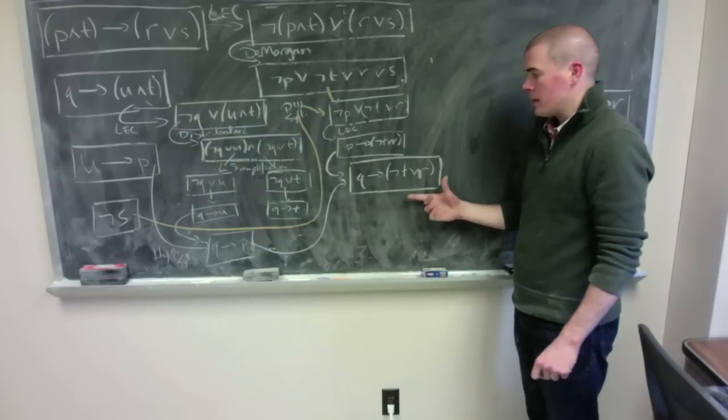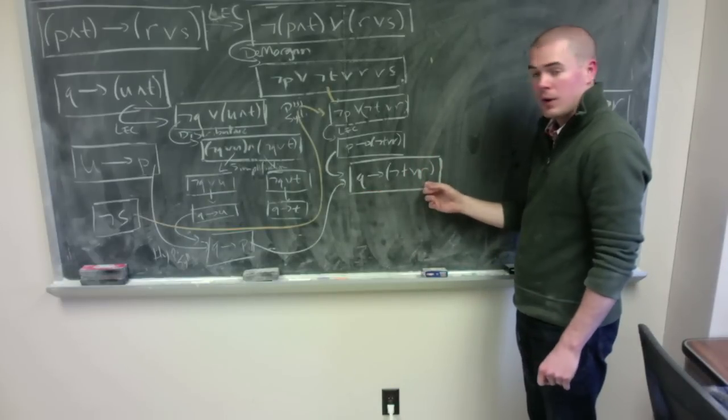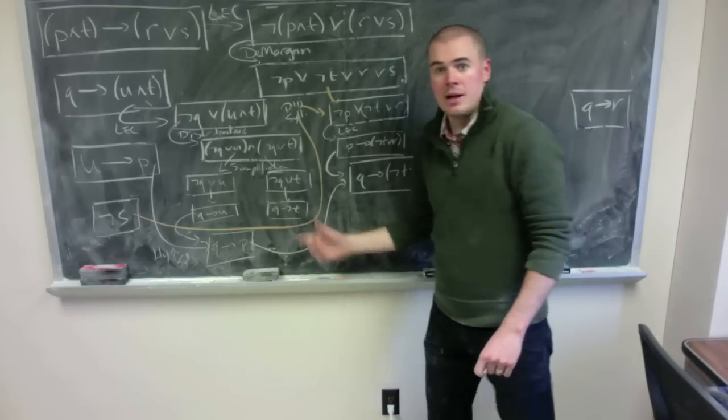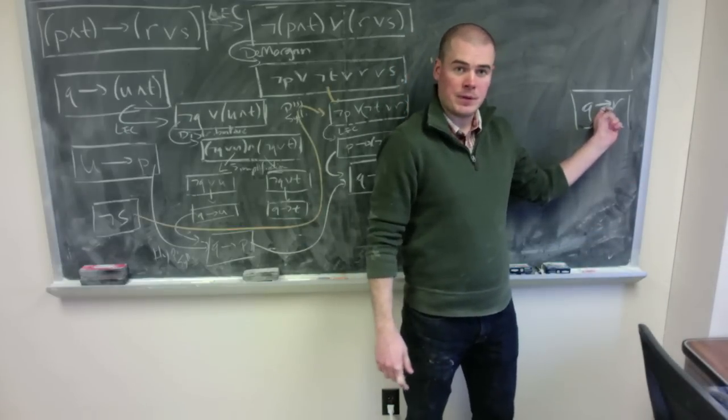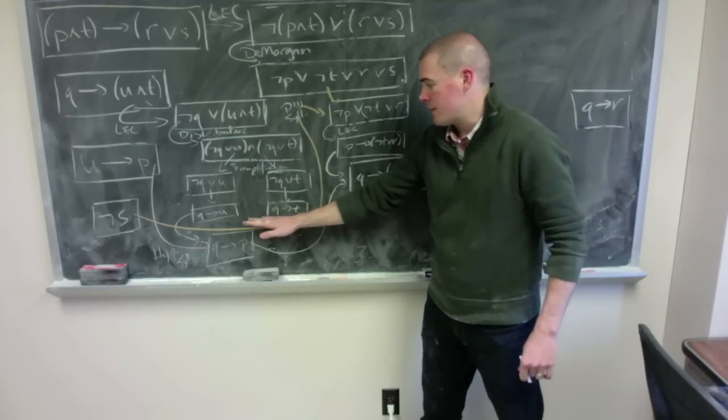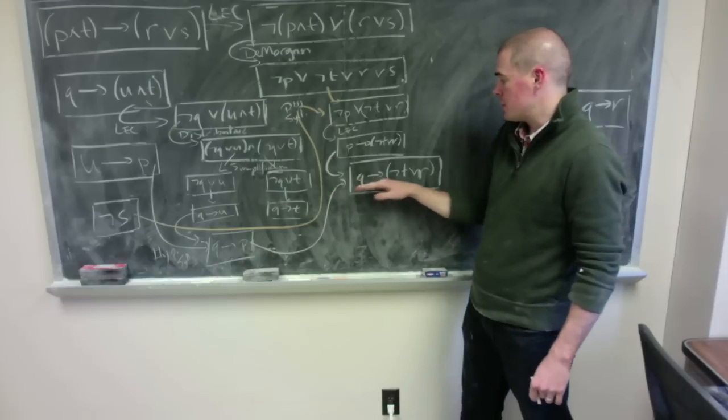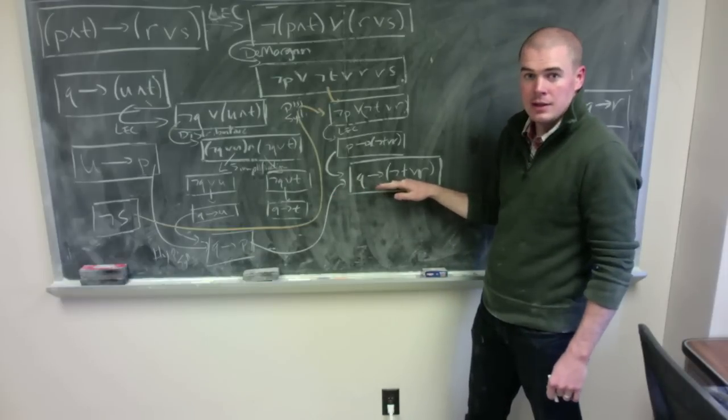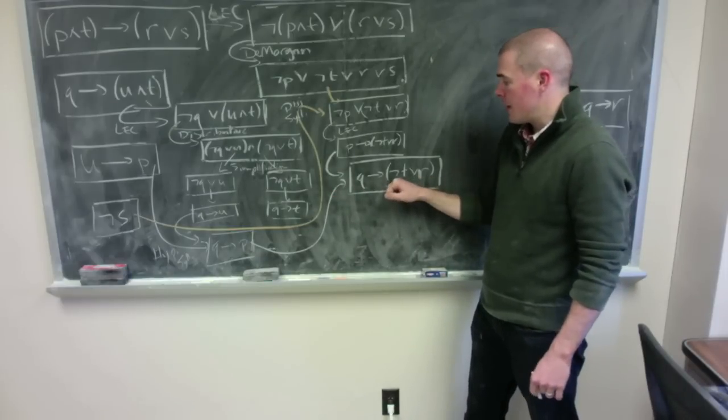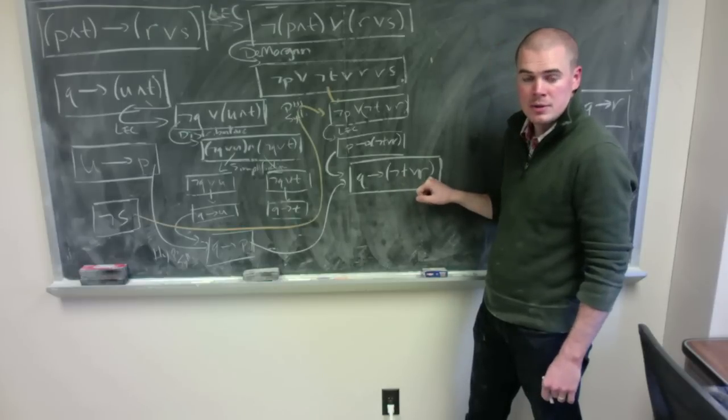Now again let's look at the things that don't have arrows out on them. I have Q implies NOT T or R and I have Q implies T. Now I'm trying to get to Q implies R. Now if we think about it informally what I have is that if Q is true then T is true. And also if Q is true then either NOT T or R. But I know that when Q is true NOT T is false. So then R needs to be true.